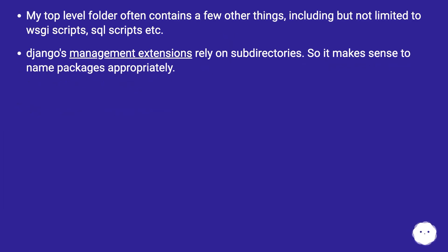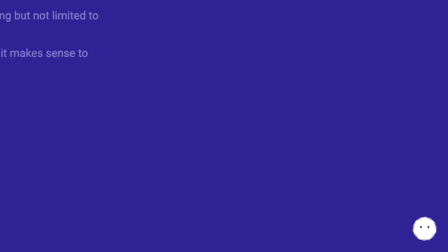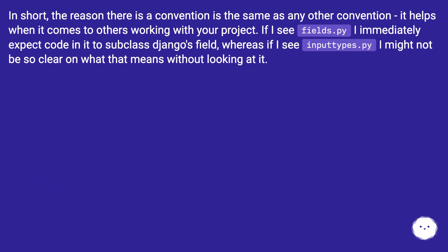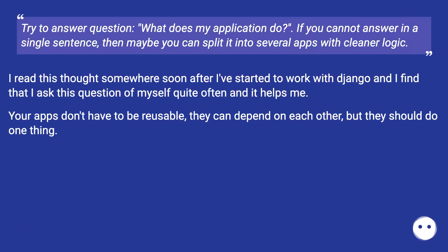My top-level folder often contains a few other things including but not limited to WSGI scripts, SQL scripts, etc. Django's management extensions rely on subdirectories, so it makes sense to name packages appropriately. The reason there is a convention is the same as any other convention — it helps when others work with your project. If I see fields.py, I immediately expect code in it to subclass Django's field, whereas if I see input_types.py, I might not be so clear on what that means without looking at it.